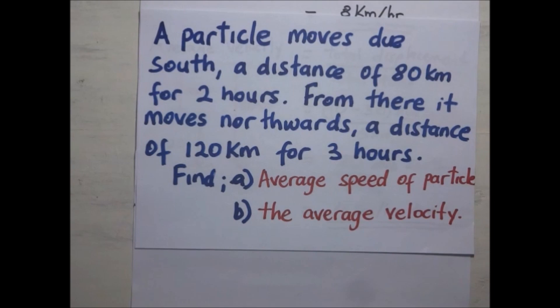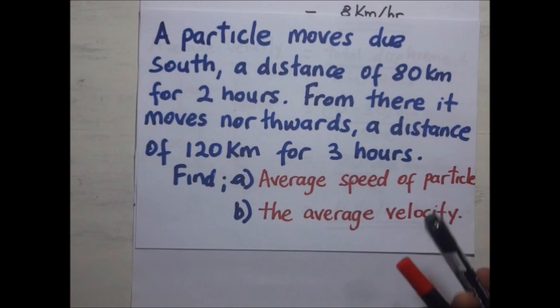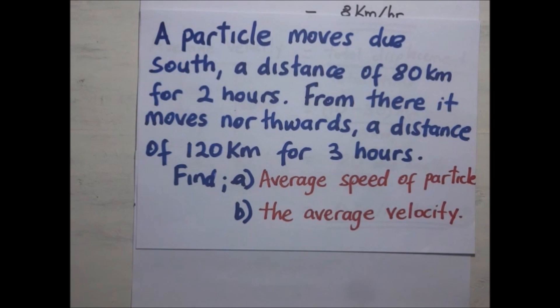You can try this example on your own: a particle moves due south 80 kilometers in 2 hours, then moves northward 120 kilometers in 3 hours. The expected average speed is 40 kilometers per hour, and the expected average velocity is 8 kilometers per hour in the north direction.